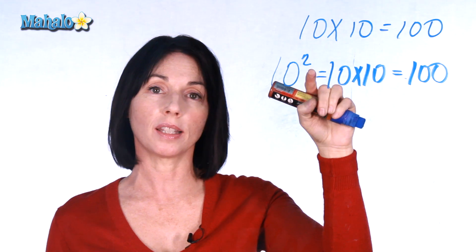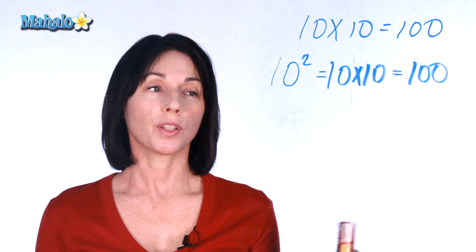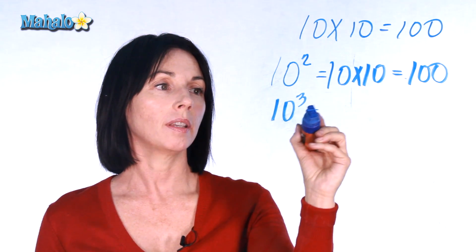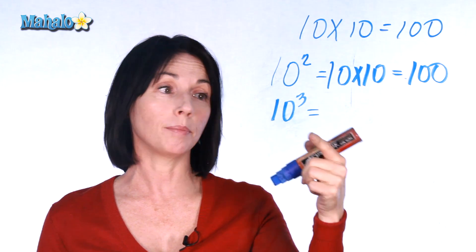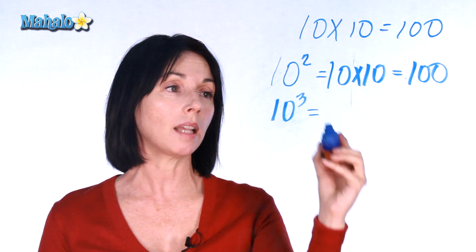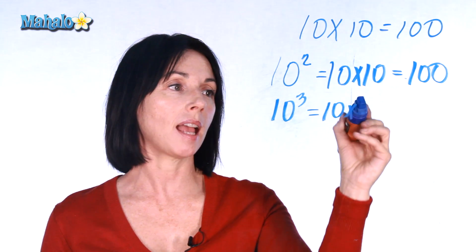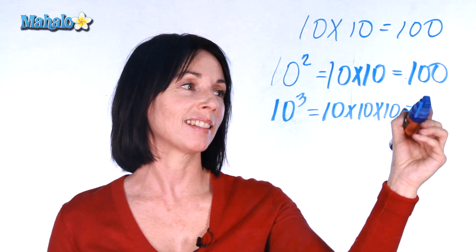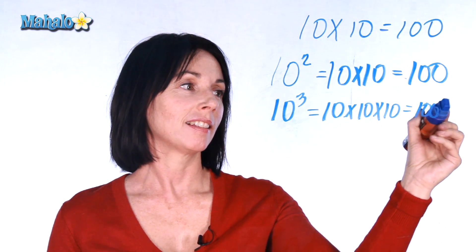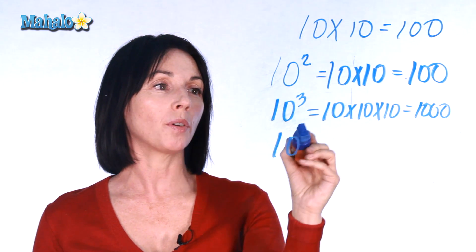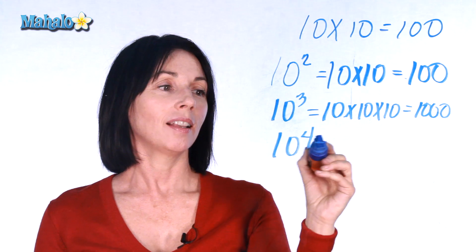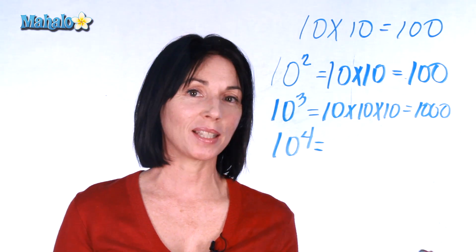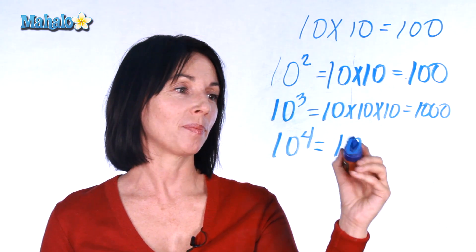So this number here is the exponent. Let's look at 10 to the power of 3 — that just means we multiply 10 by itself three times, so 10 times 10 times 10, and that equals 1,000. Now what if we have 10 to the power of 4? That will be 10 times 10 times 10 times 10, and that will be 10,000.